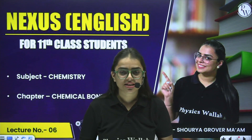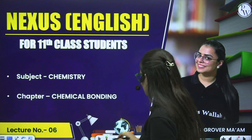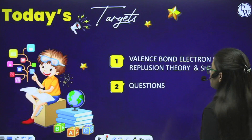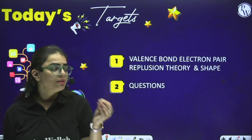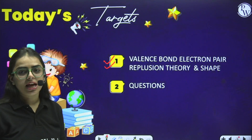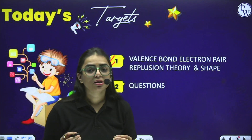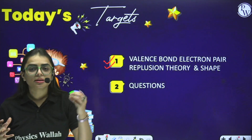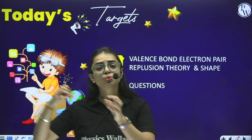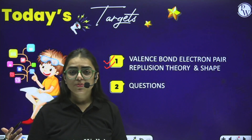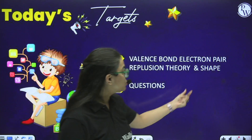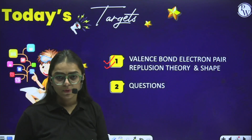I again welcome you all to your Nexus Batch. Today we are going to start with lecture number 6 for this particular session. The first topic we are going to cover is valence bond electron pair repulsion theory and the shape. When a molecule contains lone pair of electrons, there is repulsion between the lone pair and bond pair electrons, due to which the shape we imagined from hybridization comes out to be different.